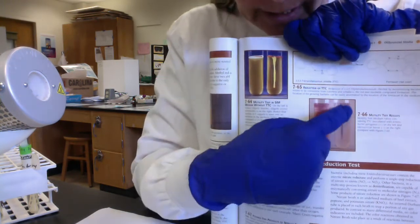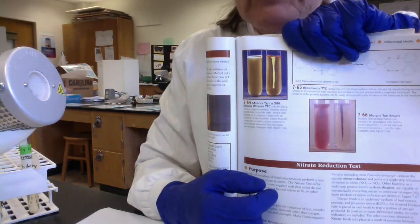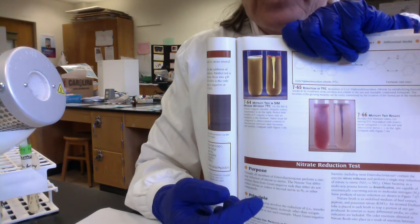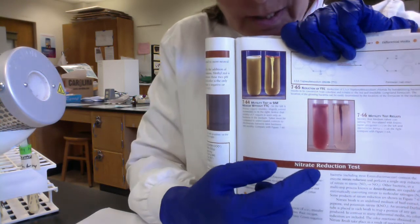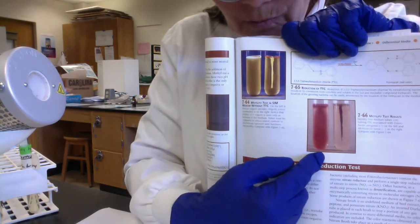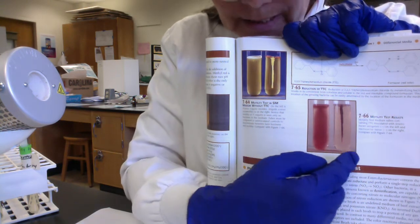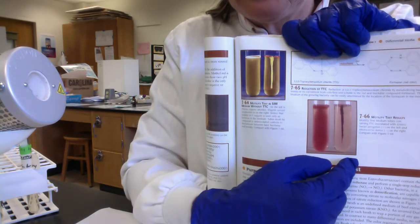But if our little microbes aren't motile, let me see if I can get my finger on the right guy here. If they're not motile, if they don't have flagella, they can't move. So they're stuck just growing along the stab line. So in this case, this would be after incubation. This would be a positive result for motility. This would be a negative result for motility.